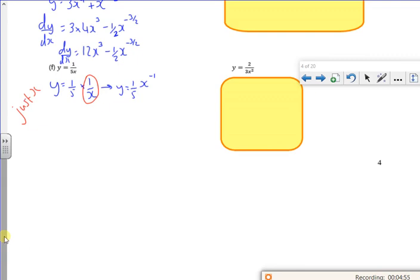Right, so dy by dx is one-fifth times by minus 1, that's minus 2. The power at the front, take 1 off the power.